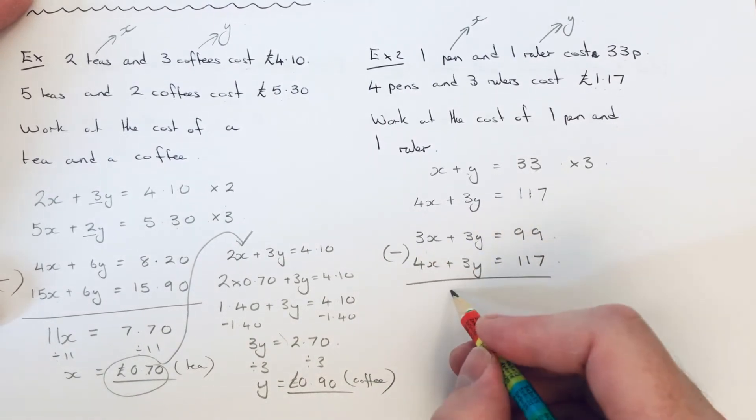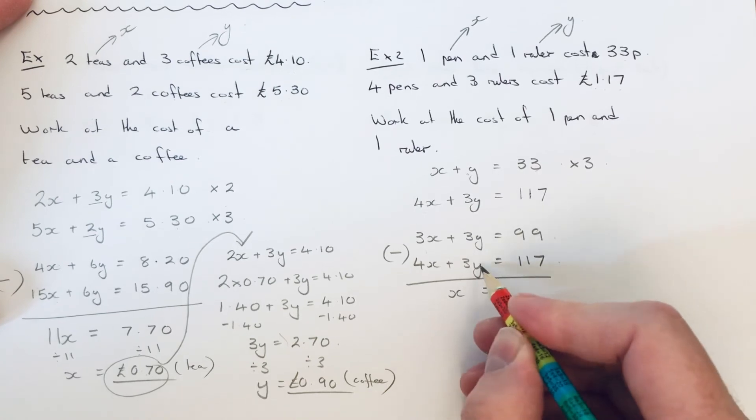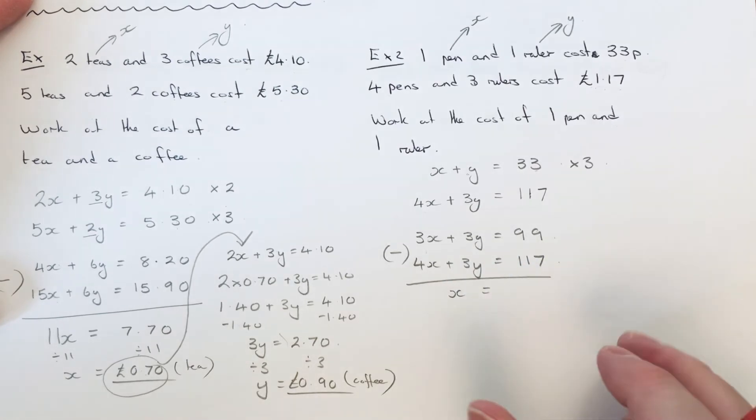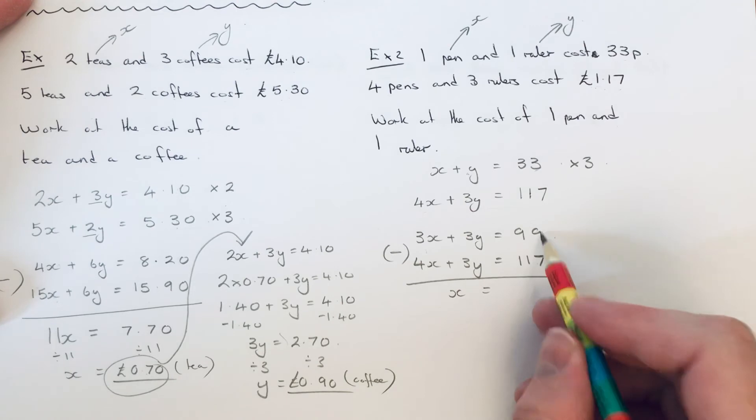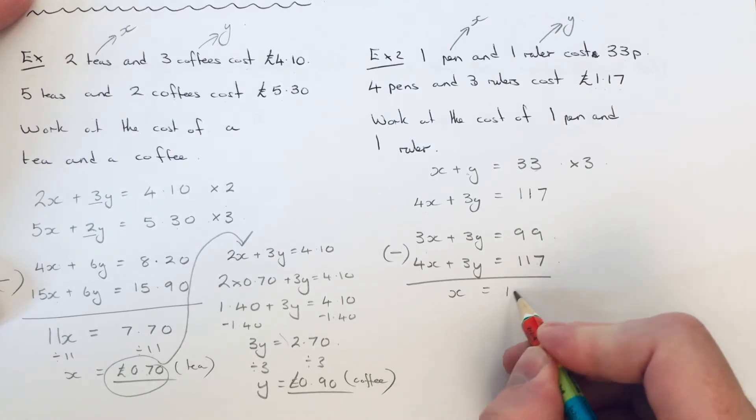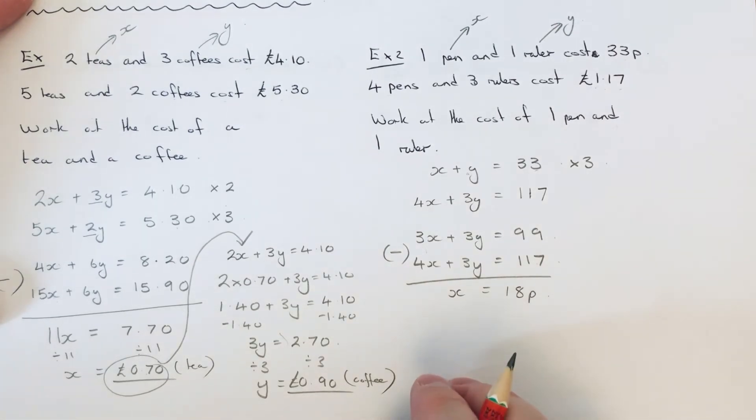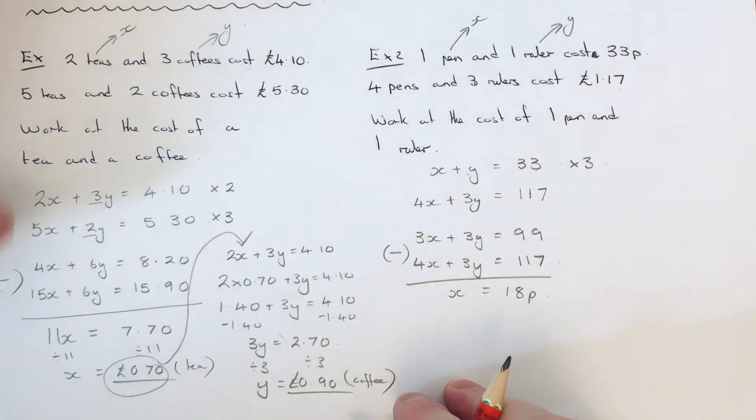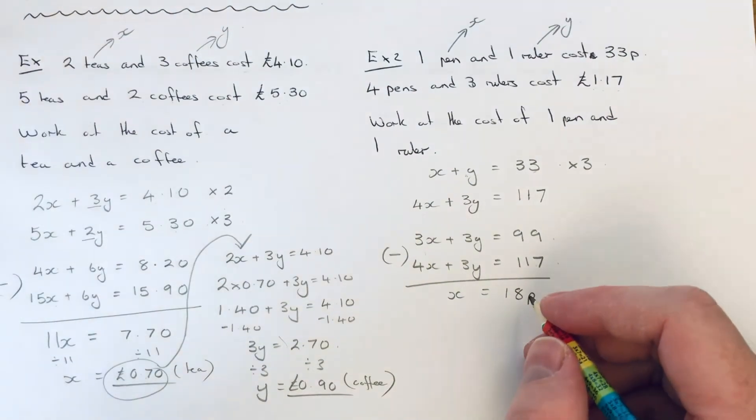So 4x take away 3x is x. 3y take away 3y cancels out. And 117 take away 99 is 18. So the cost of a pen is 18p.